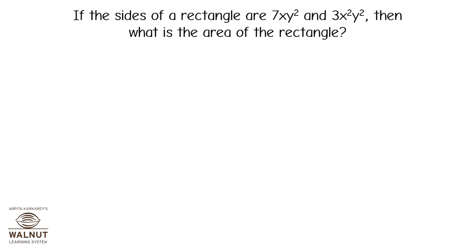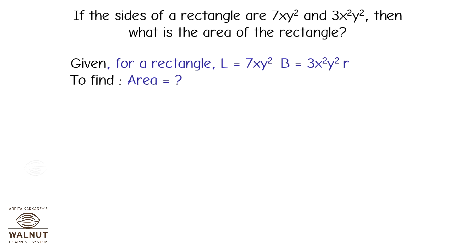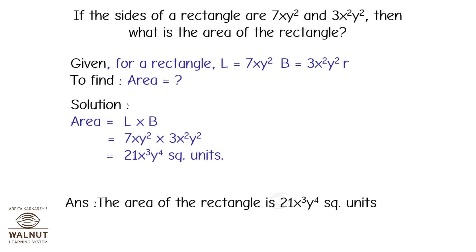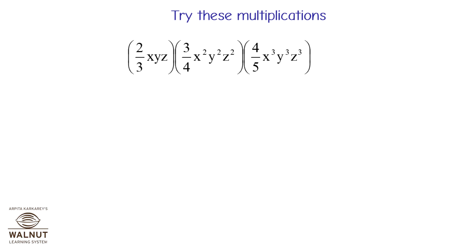If the sides of a rectangle are 7xy squared and 3x squared y squared, then what is the area of the rectangle? We are given l equals 7xy squared and b equals 3x squared y squared. Area equals l into b equals 7xy squared into 3x squared y squared, which is equal to 21x cubed y raised to 4 square units.